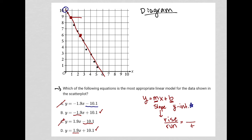My run would be positive. But in terms of my rise, I'm going down, right? So right and down, which means my rise would be negative.